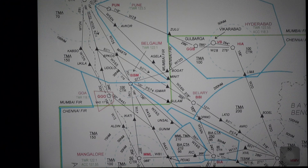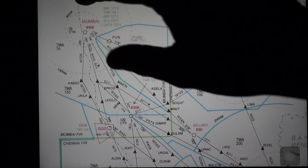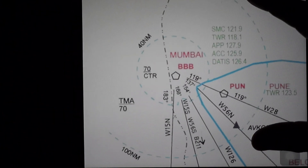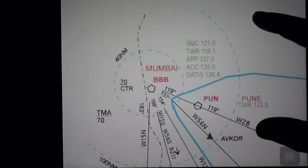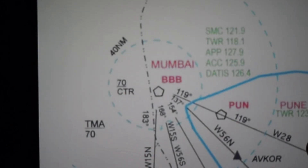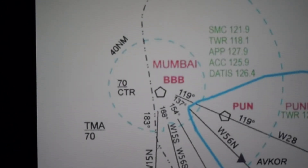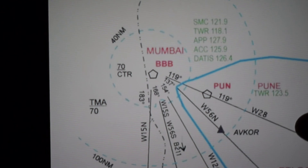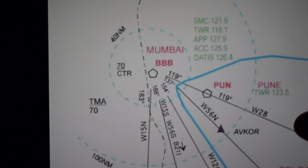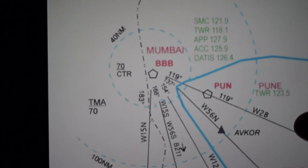In this video I'm going to tell you how to read an RTR chart and what are the components. So let's start off with Mumbai for example. Here you can see SMC, that is Surface Movement Control, and there is tower, approach, the frequencies, and area control frequencies, and DATIS, that is the Digital ATIS frequency. All the frequencies are given in green color beside the destination or the city that you are flying to or flying out from.